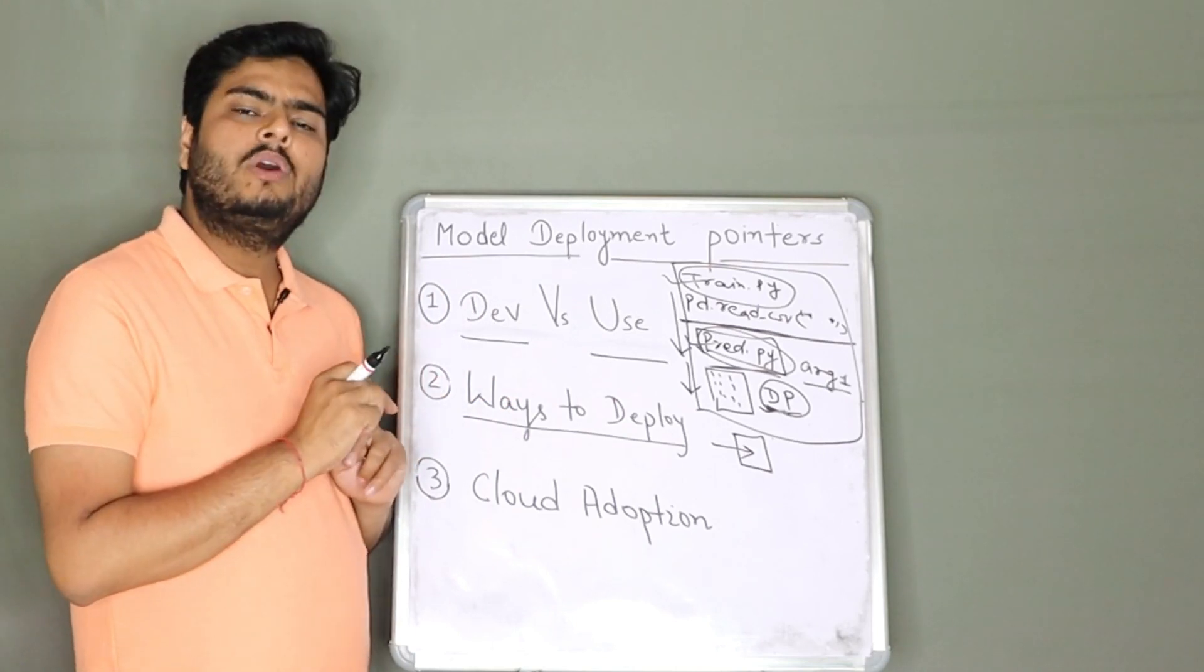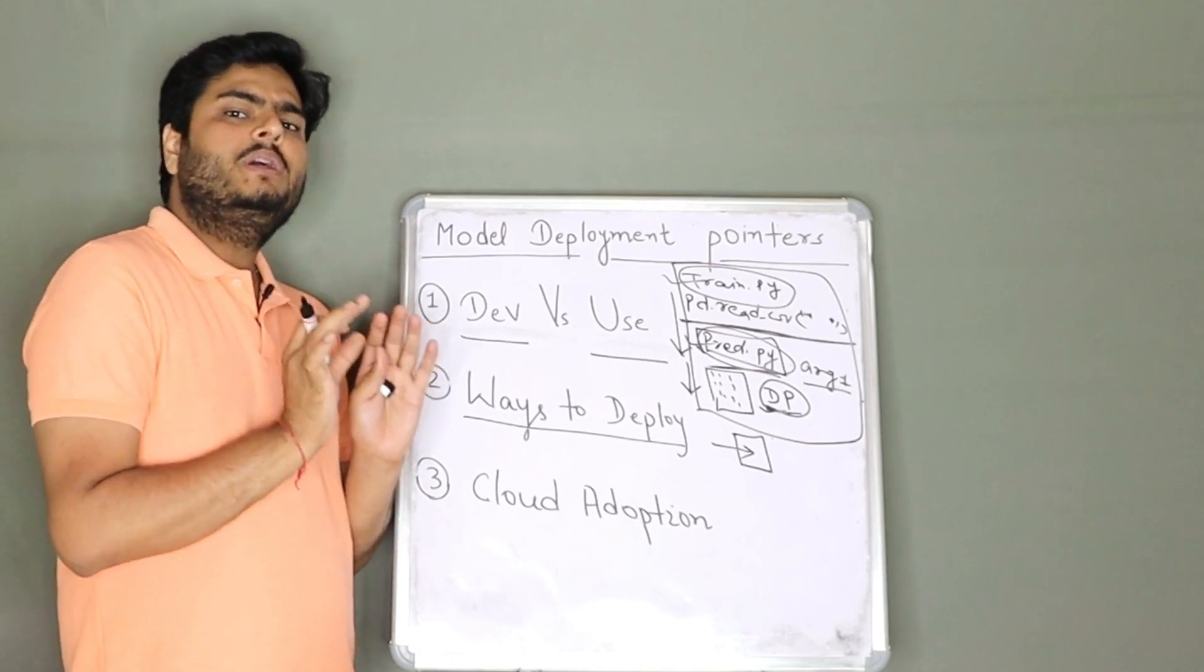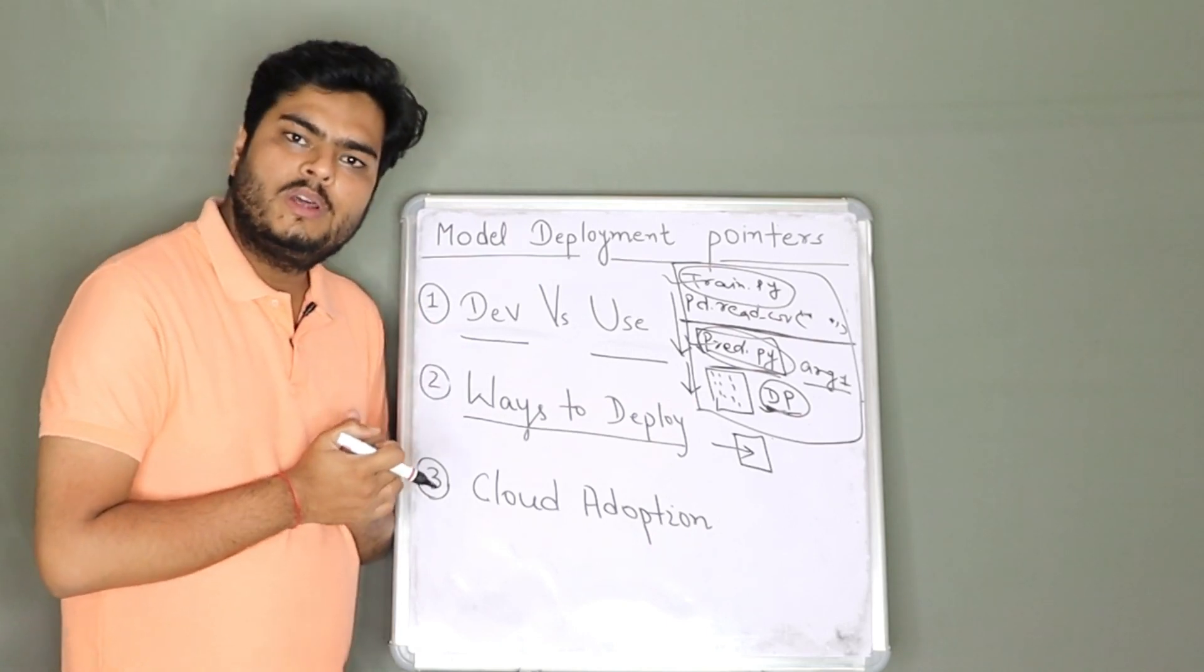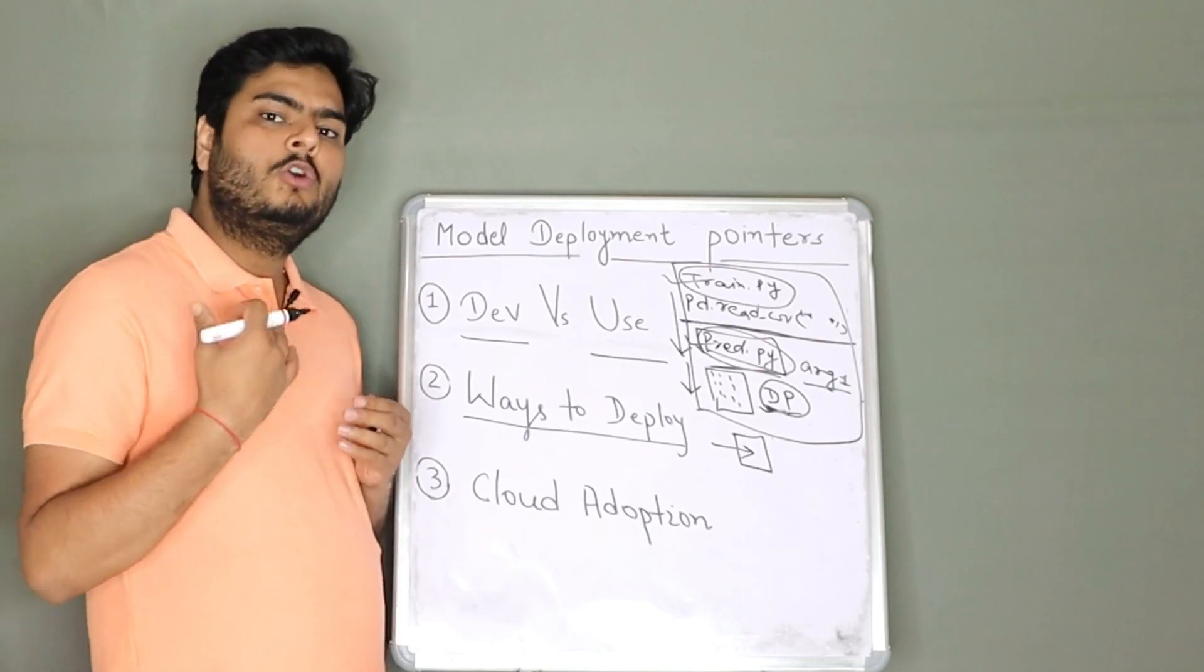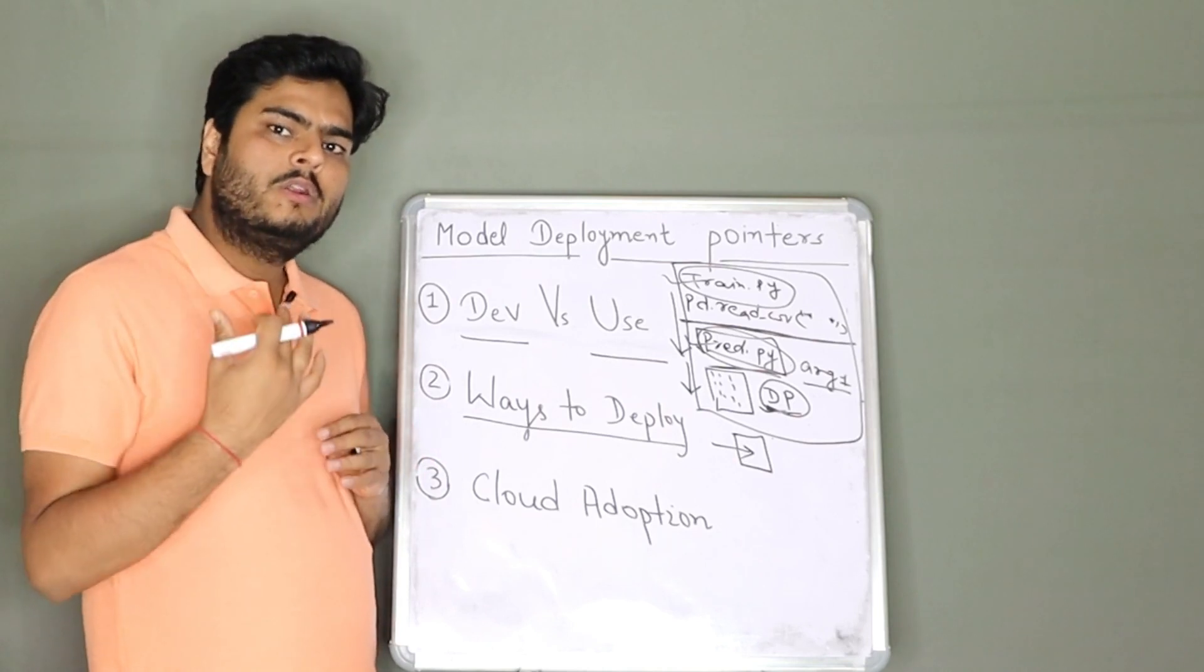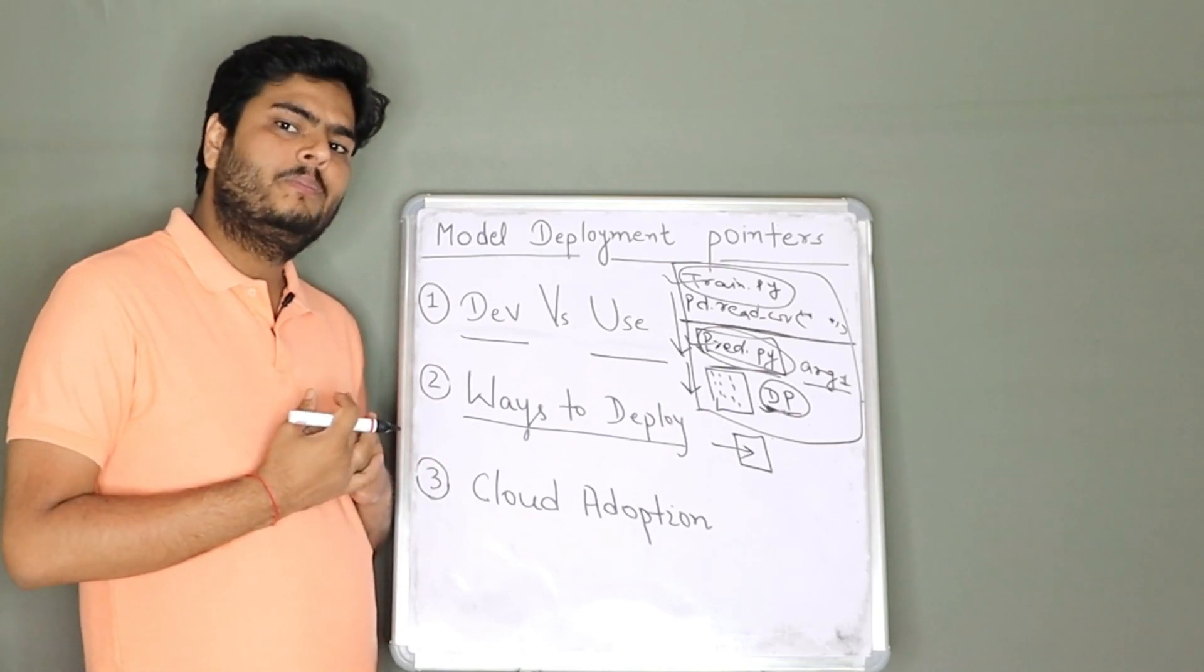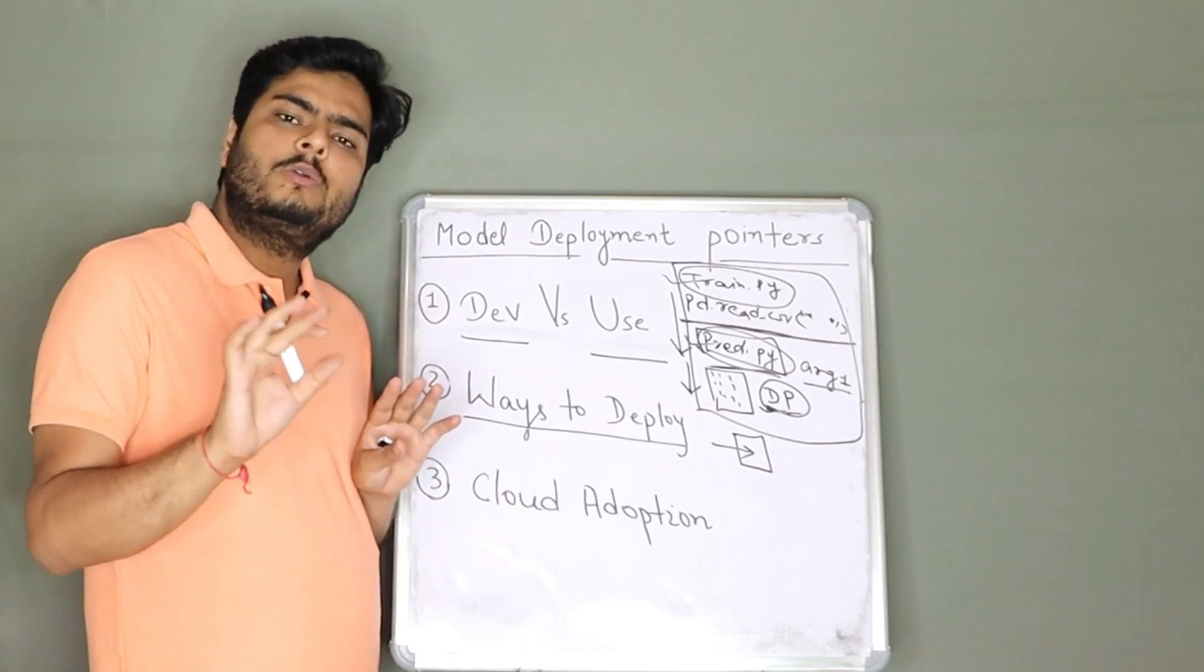The third way and very popular nowadays is nothing but cloud way. So everybody knows cloud. Cloud is getting popular. You know, XYZ petabytes of data is moving to cloud by 2021. All these stories are there. You know, cloud adoption is increasing. All these things are there. So what are the three, four different ways we have spoken about till now about model deployment?